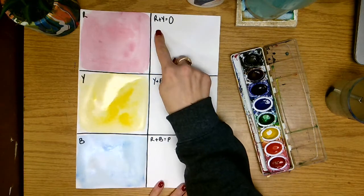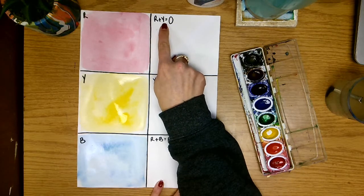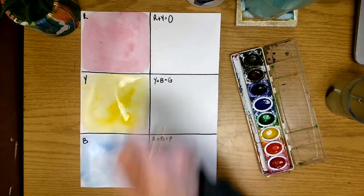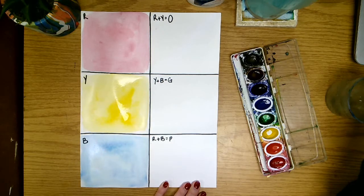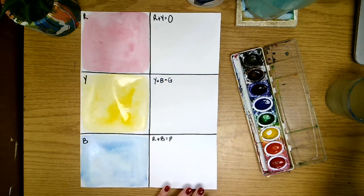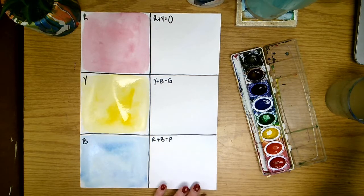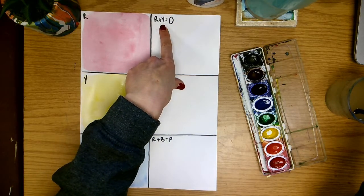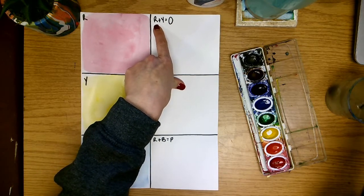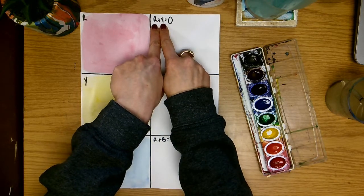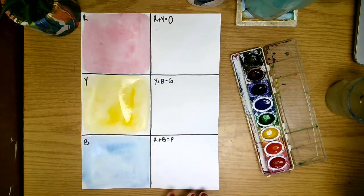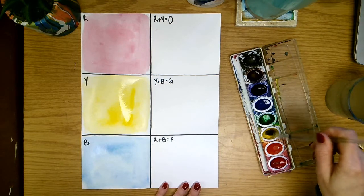Over here we have our red plus yellow equals O for orange. So when we mix colors we always add the darkest color into the lightest color. So what that means for us today is we are going to start with the lightest of these two. Which one is lighter, red or yellow? If you guessed yellow you were right.